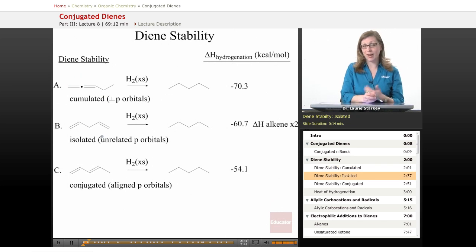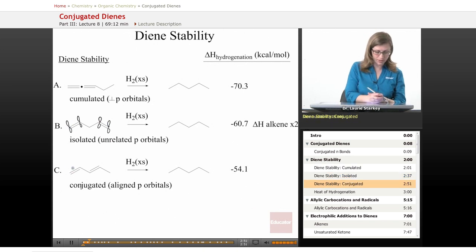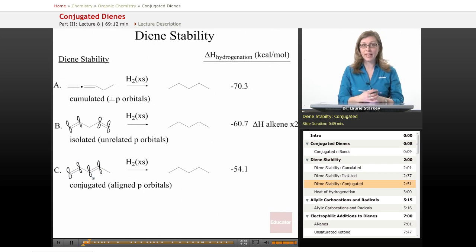Here we have pi bonds that are unrelated - they're isolated. The p orbitals on these two carbons have no relationship at all to the p orbitals on the other two carbons. And then finally we have the conjugated system where we can have some interaction and some delocalization because of resonance.